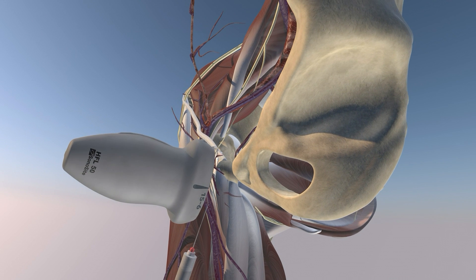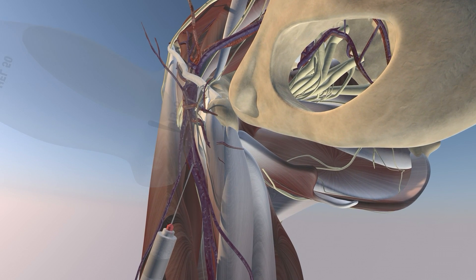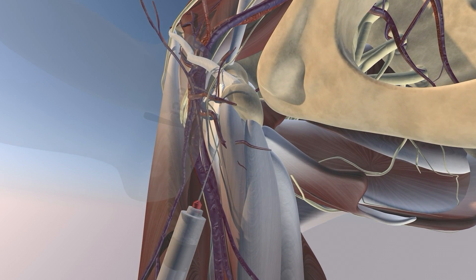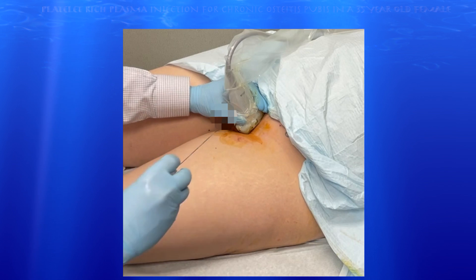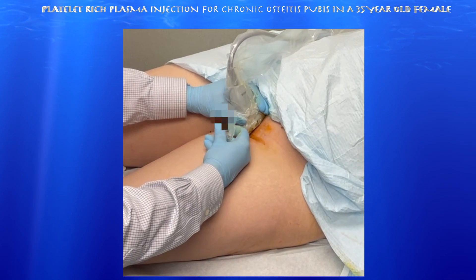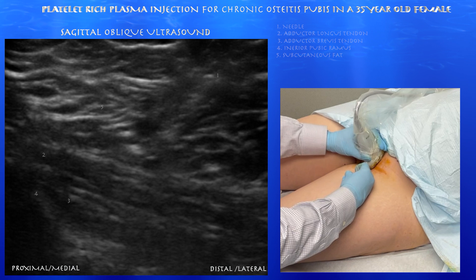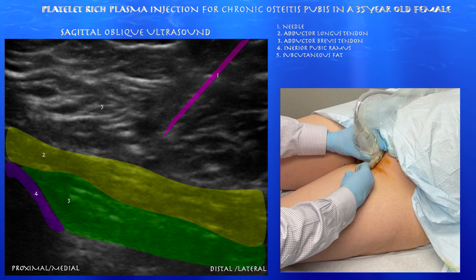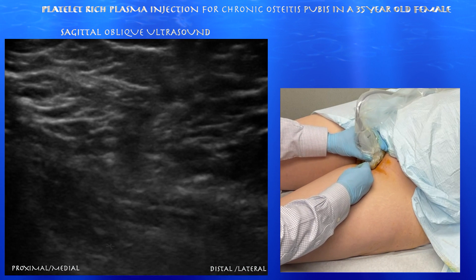We're using an in-plane approach during the injection, and we're essentially trying to get the needle at the origin of the adductor musculature — essentially at the adductor longus, perhaps a little bit of the adductor brevis tendon as well. You can see some of the injectate going superficial to the adductor longus tendon. Here you can see the needle in an in-plane approach, heading right towards the adductor longus muscle-tendon junction, with nice layering of the adductor longus muscle over the adductor brevis muscle.